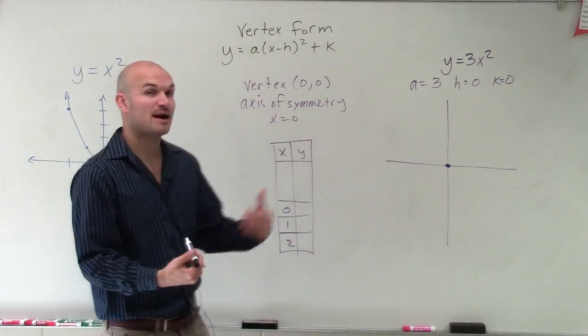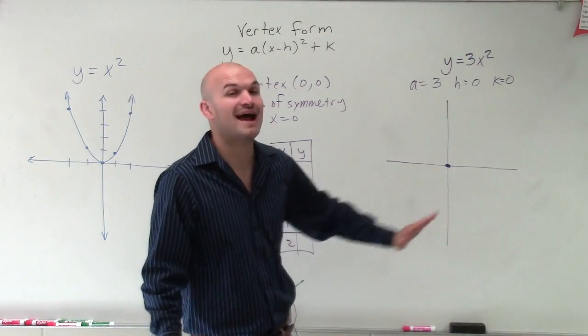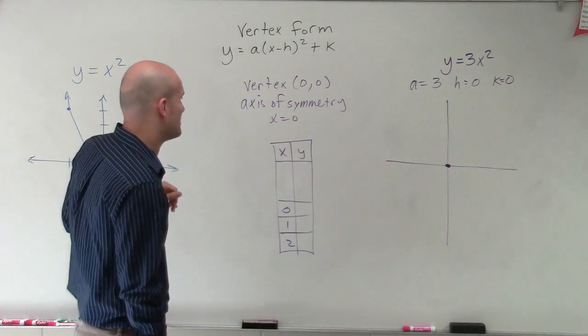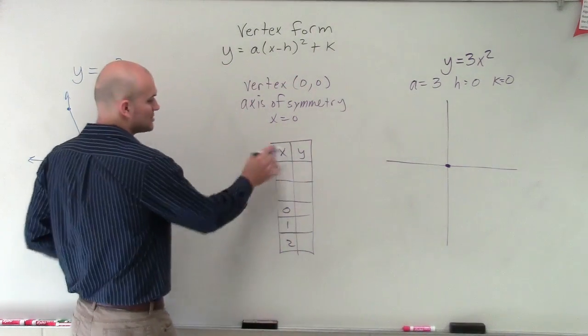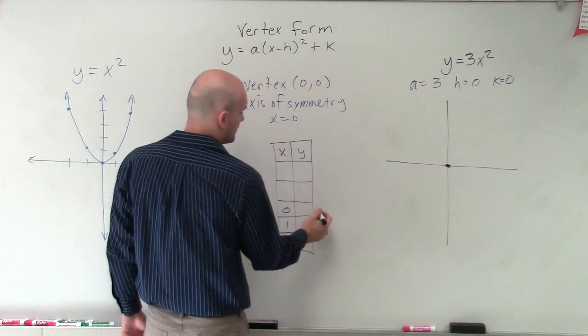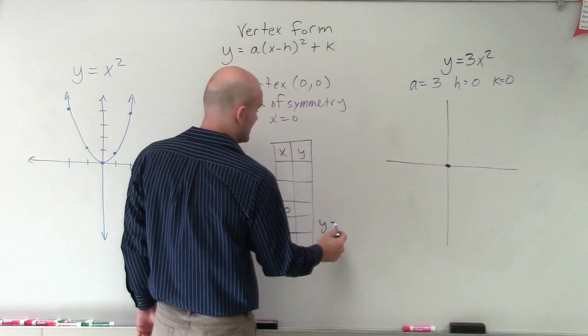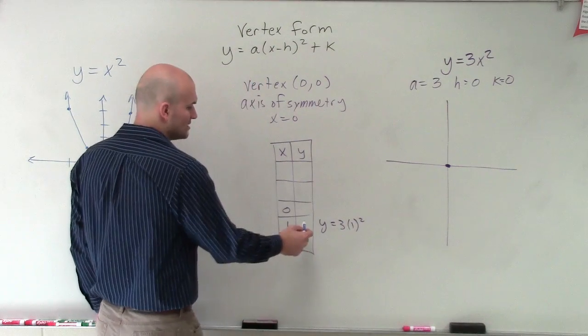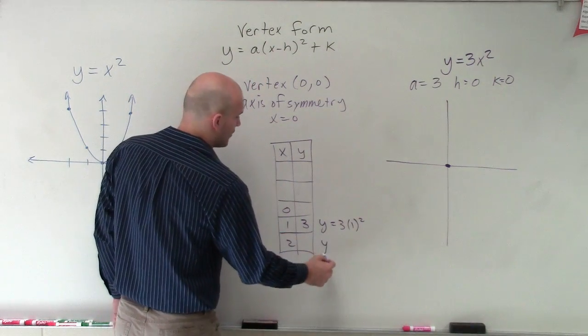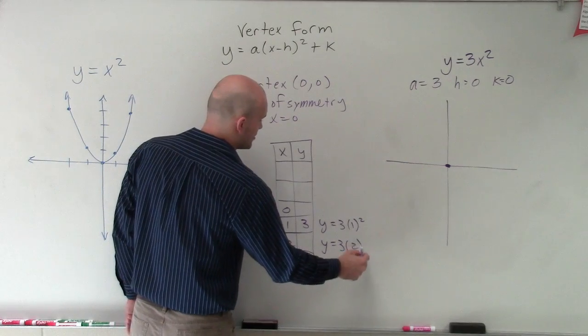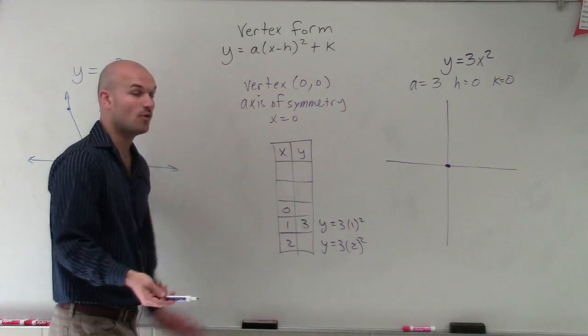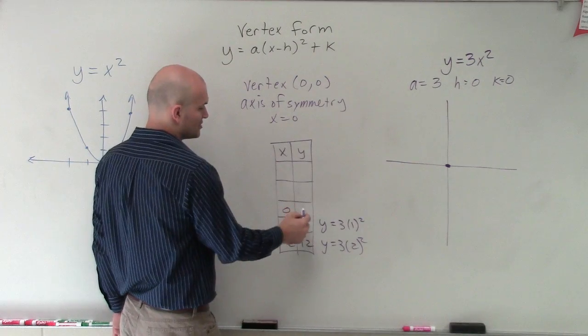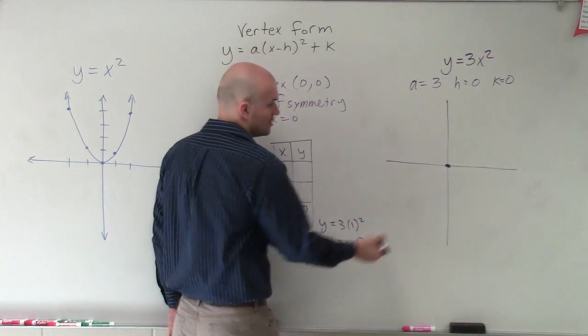And again, once I find my y coordinates for there, I'll be able to graph half of it. Then I can apply the axis of symmetry to graph the other part of my parabola. All right, so let's go and evaluate for 1 and 2. So I'll have y equals 3 times 1 squared. Well, 1 squared is 1 times 3 is 3. And then I have y equals 3 times 2 squared. Well, 2 squared is 4. 4 times 3 is 12. And 0, we know, is going to be 0 because that's our vertex.